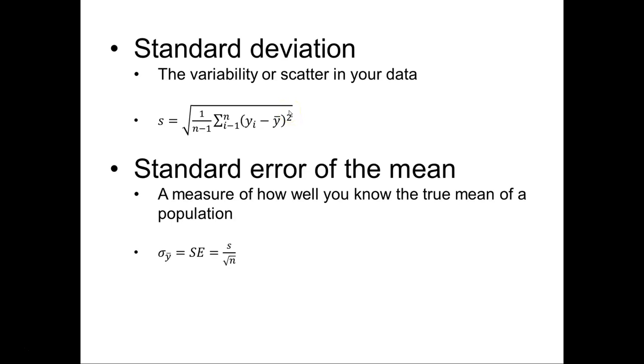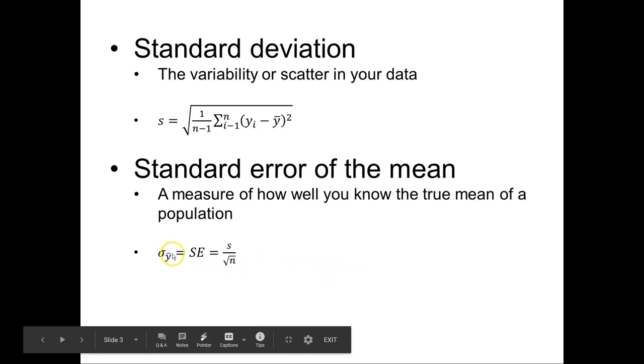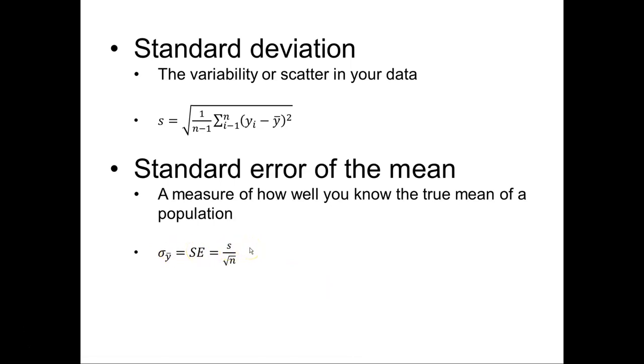Now once we have the standard deviation we might be interested in the standard error. So this is the measure of how well you know the true mean of a population. And so in this case we can adopt that sigma sub y bar or just the standard error, and we can take that by the standard deviation divided by the square root of n.